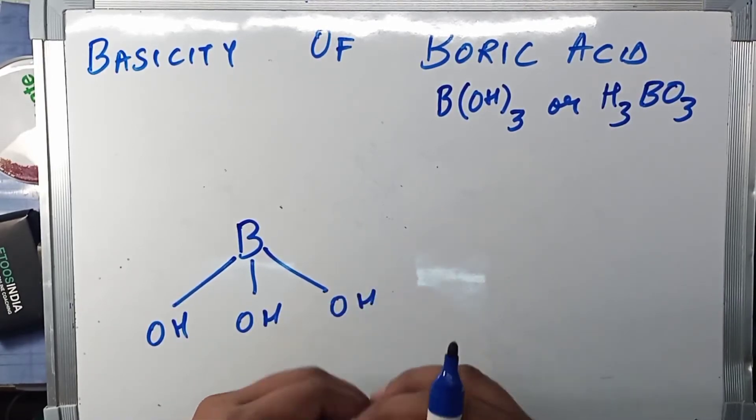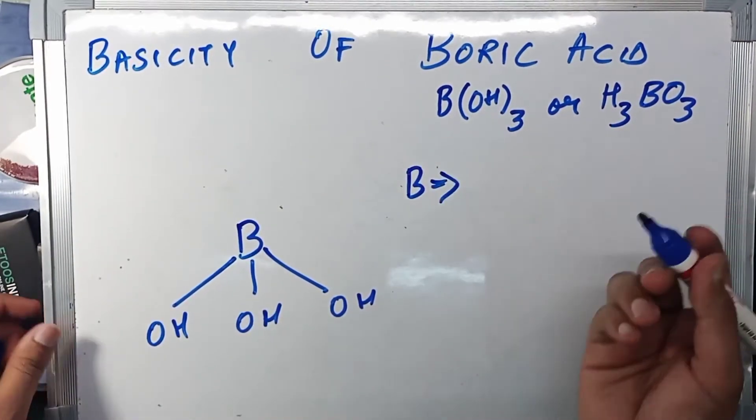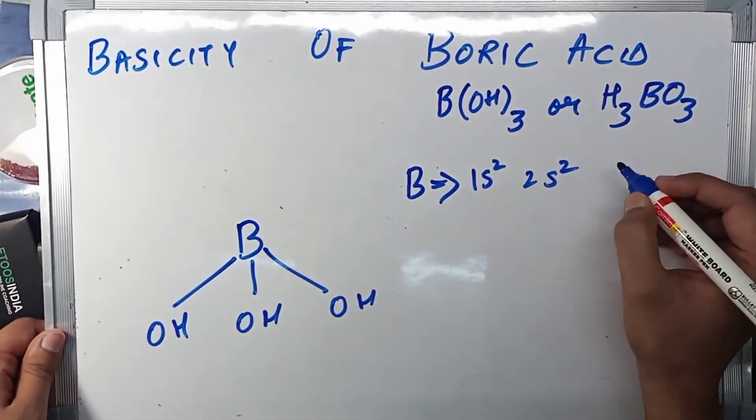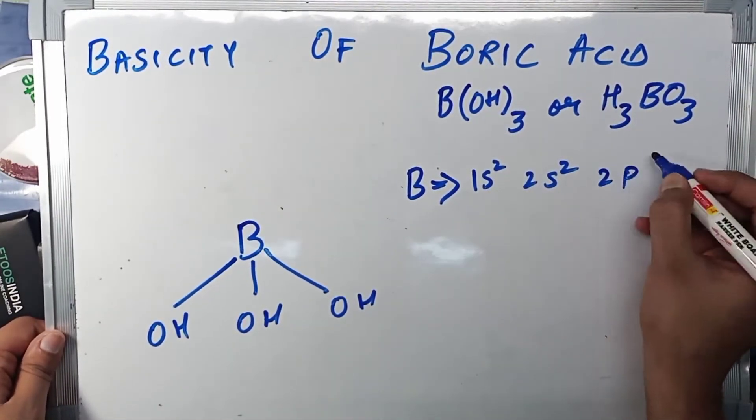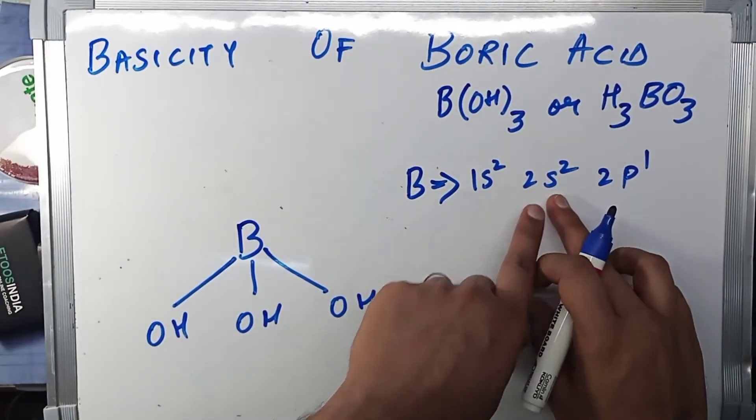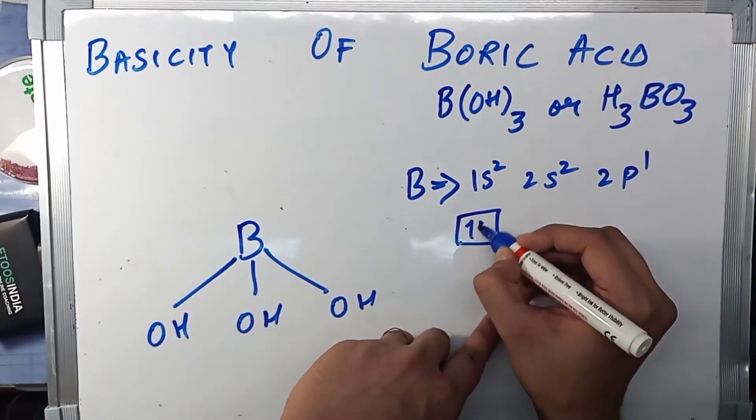Now I'm going to write the electronic configuration of boron, because if I don't, then the whole purpose of understanding the basicity will fail. So the electronic configuration of boron is 1s² 2s² and 2p¹, right?